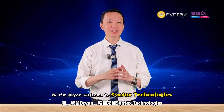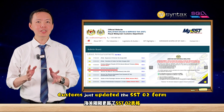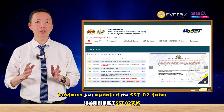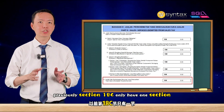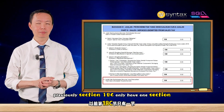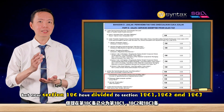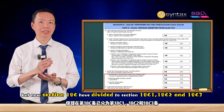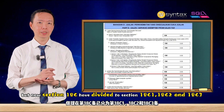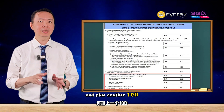Hi, I'm Brian. Welcome to Syntax Knowledge. Customs has updated the SST02 form. Previously, Section 18c only had one section. But now, Section 18c has been divided into Section 18c1, 18c2, and 18c3, plus another 18d.